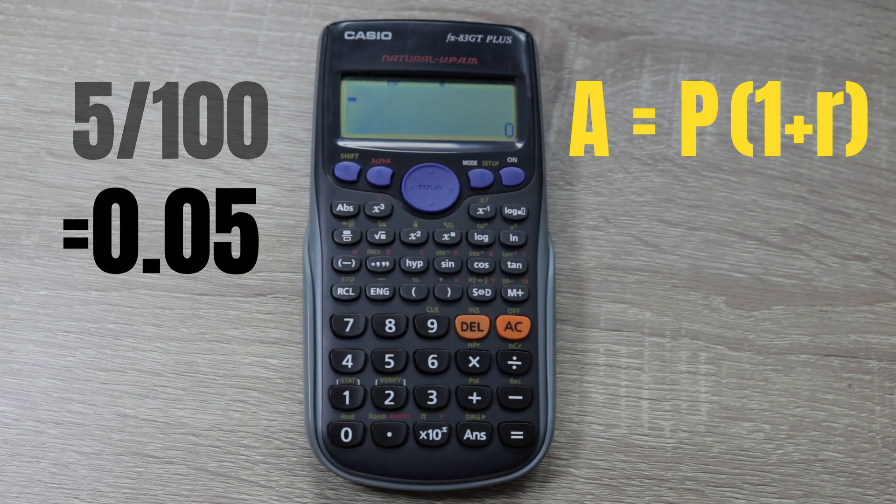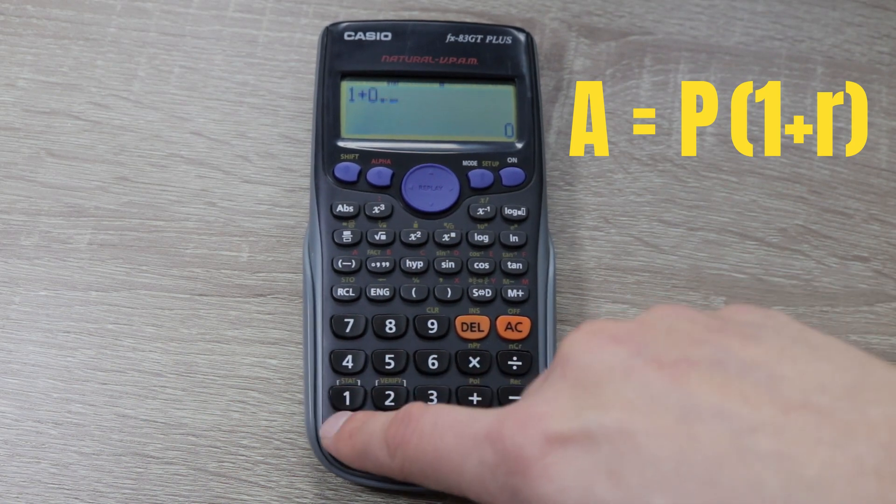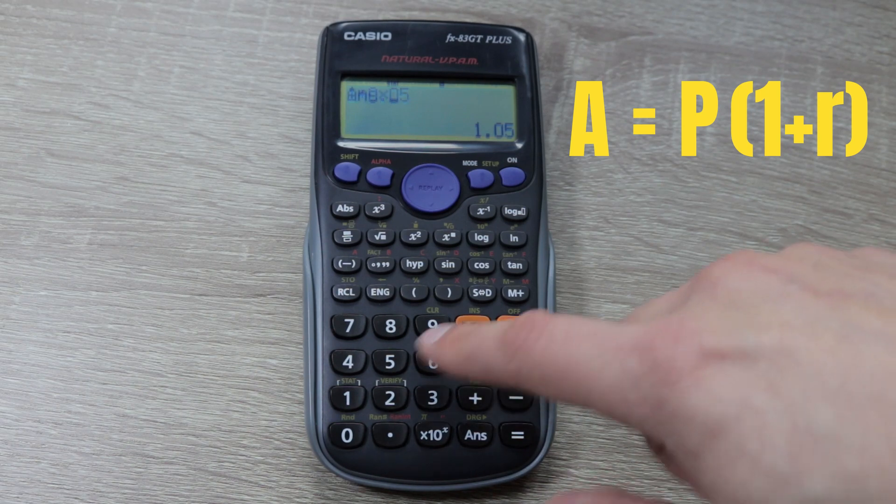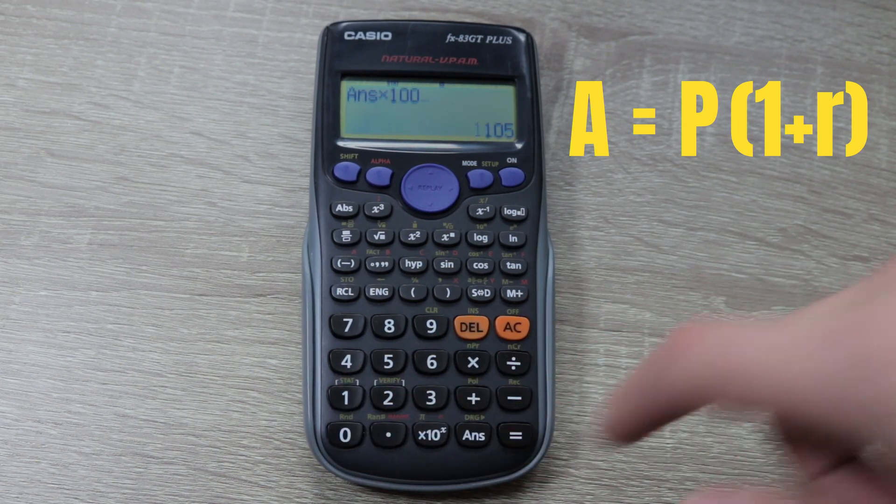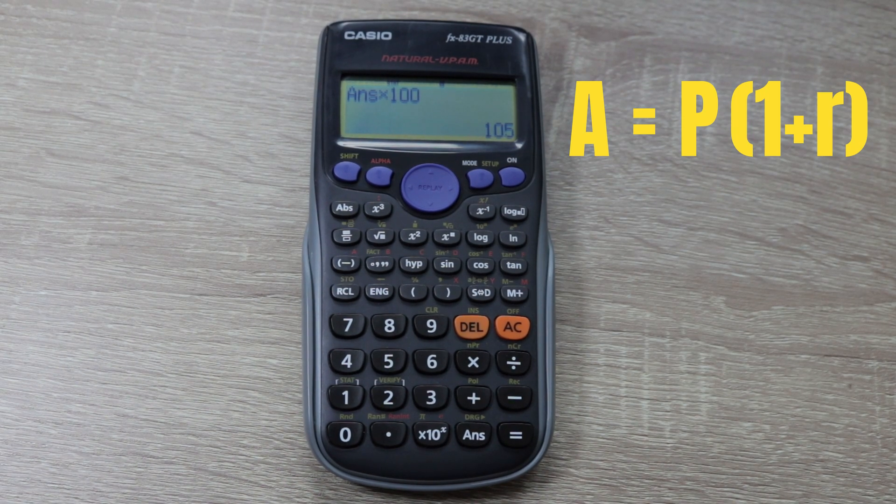We calculate what's in the brackets first, so we do 1 plus 0.05 to give us 1.05, and then we simply times that by 100. So our value at the end of one year is £105 based on 5% on £100 starting amount.